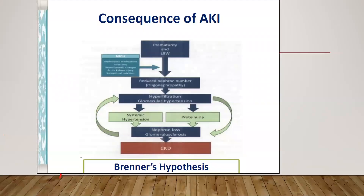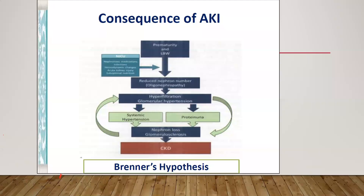Brenner's hypothesis is very important. Any baby who has an AKI, as well as premature and low birth weight babies, suffers injury to nephrons leading to a reduction in nephron number. The remaining nephrons work extra hard to compensate, leading to hyperfiltration injury and glomerular hypertension, which ultimately causes systemic hypertension and proteinuria. These babies are at risk for CKD. All babies who have had AKI are at risk for CKD.